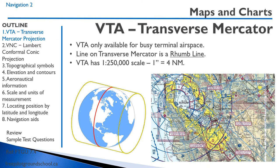Because all the lines of longitude are parallel on a Transverse Mercator, a line drawn on it is a rhumb line — it crosses all lines of longitude at the same angle. A VTA (Visual Terminal Area chart) has a scale of 1:250,000, so one inch equals four nautical miles. VTAs are only available for busy terminal airspace — in Canada, you can get one for Toronto, Montreal, Vancouver, or Calgary, but not for smaller cities like Thunder Bay. They're quite rare and most people don't actually use them.